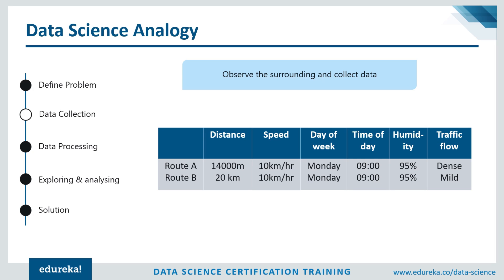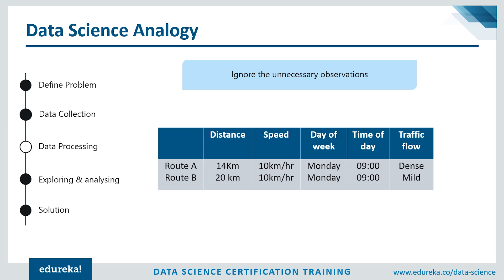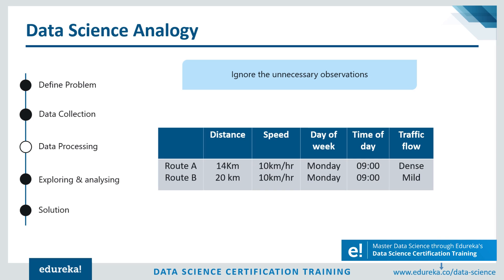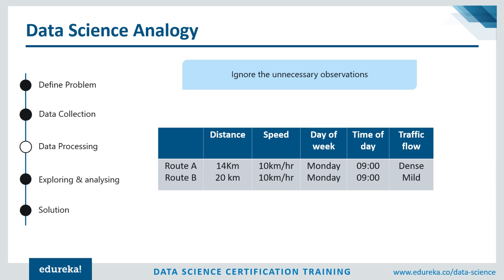This is the second step of data science — data collection. Now, data processing: when we collected data about traffic on route A, we also collected unnecessary data like the color of cars, types of two-wheelers, and humidity. This data is not required to determine the fastest route. The process of removing unwanted or irrelevant data is called data cleaning. For example, I've removed the humidity column and converted distance from 14,000 meters to kilometers — this is data cleaning and data processing.